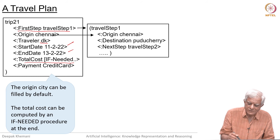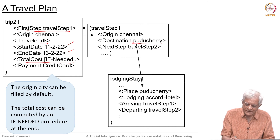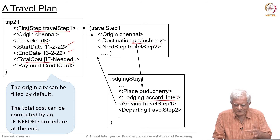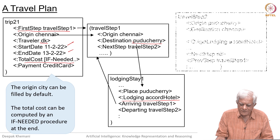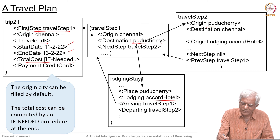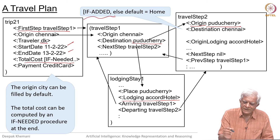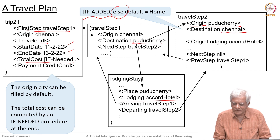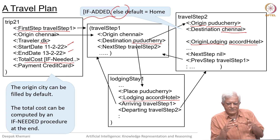For a trip I made recently to Puducherry, the frame system would say this is where I want to go — I am going to Puducherry — and then there may be another step and so on. In Puducherry I stayed in a particular hotel called Accord Hotel, and some of the information is copied from one frame to another. This is what the frame software system should assist in doing — I do not have to manually fill in everything. The next travel step can automatically fill in that the origin is Puducherry, and the destination will by default fill in my hometown. The original lodging stay was Accord Hotel and that kind of stuff. You can see that such software, where information is structured in the form of frames, can be quite useful.